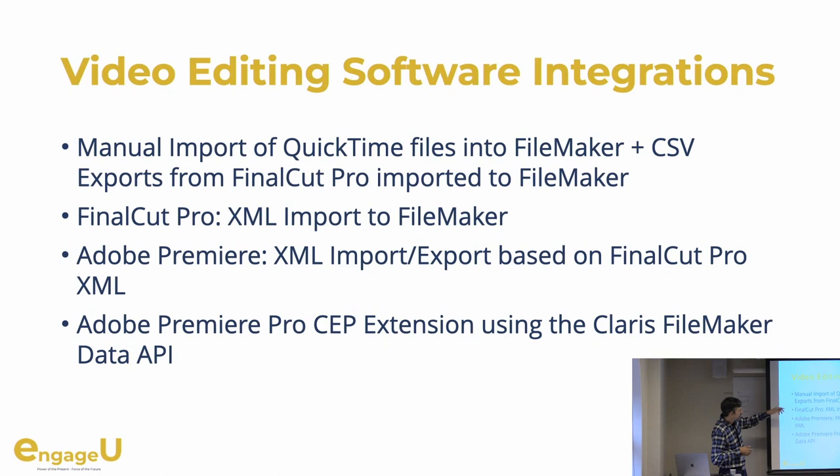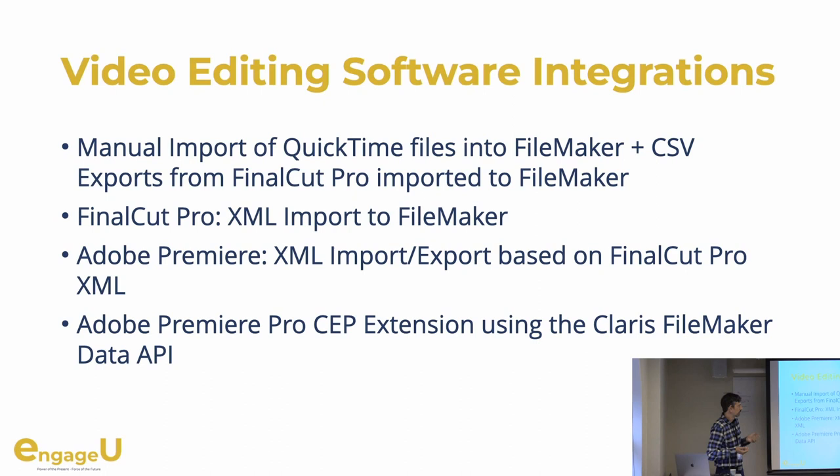Then we moved on to use Final Cut Pro XML import. I think this was already there when I came along. This was the first iteration of a more proper integration, but still one-way: the XML import. You export a Final Cut Pro file to XML, then import that into FileMaker, and you got data in a better way than with CSV — a bit more detail. Then as they were moving to Adobe Premiere, they themselves were using the Final Cut Pro XML because you can import that to Premiere as well, so that's how they were transitioning their projects.